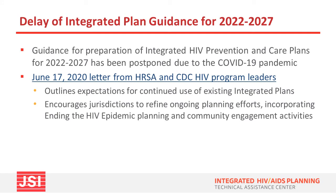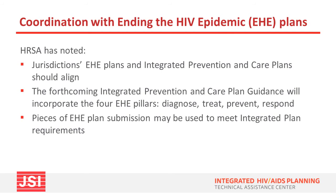Guidance for the upcoming integrated HIV prevention and care plans has been postponed due to the COVID-19 emergency, as outlined in a June 2020 letter from HRSA and CDC program leaders. The letter explains that the expected release of the guidance will be delayed, and HRSA and CDC also outlined expectations for continued use of integrated plans, encouragement for refinement of ongoing planning, incorporation of EHE plans, and community engagement. We encourage jurisdictions to incorporate community engagement for the EHE plans and integrated planning activities. The integrated HIV prevention and care plan is the umbrella plan for all HIV-related resources and activities, and the EHE plan should work in conjunction as a subset of focused resources and activities.